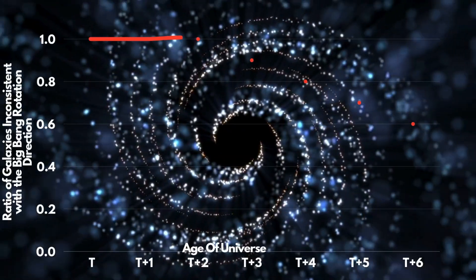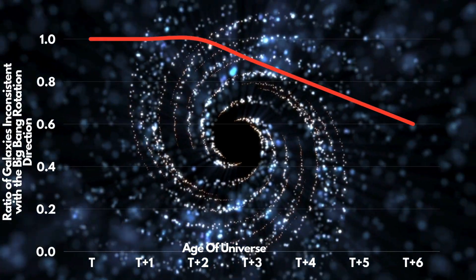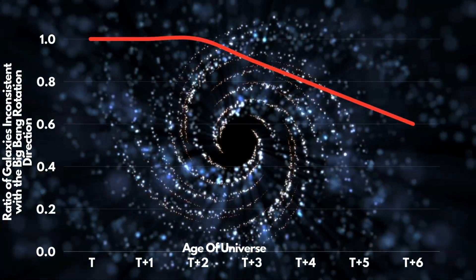This hypothesis is fundamentally based on the idea that our universe exists inside a rotating black hole. And if this is true, the increase in rotational asymmetry in the early universe would serve as crucial supporting evidence.